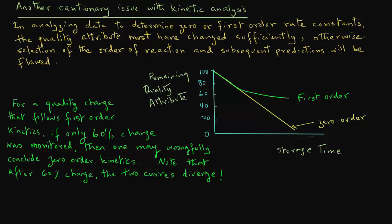So, in summary, it is important that the change in the quality attribute must be determined for a sufficiently long period of time to determine whether you have zero order or first order kinetics. If you measure that change in the quality attribute for a very short time period, it could give you a wrong estimate of the true order of reaction.